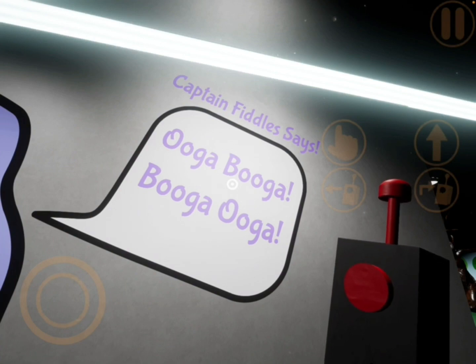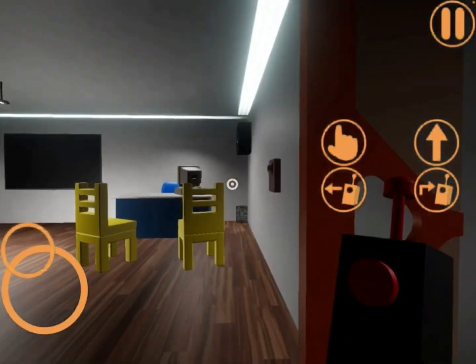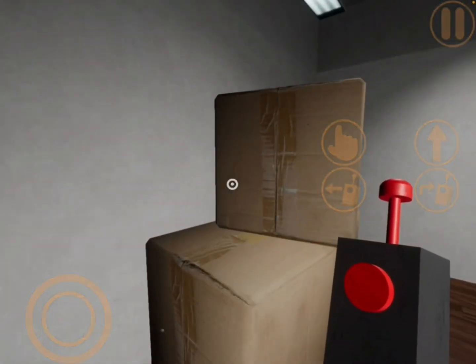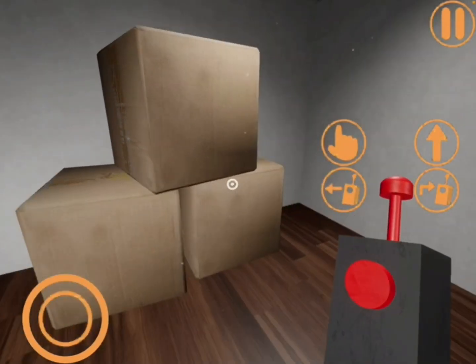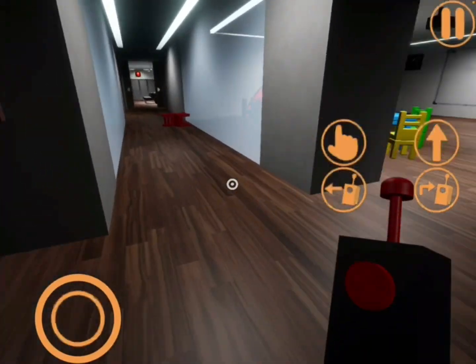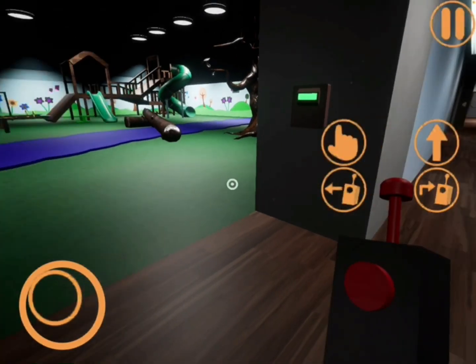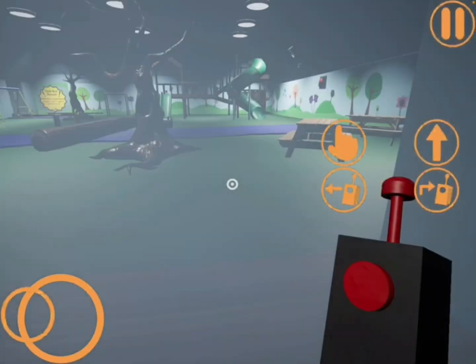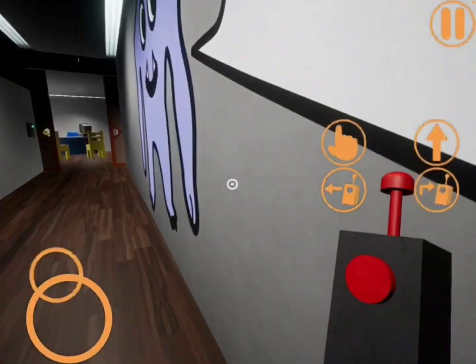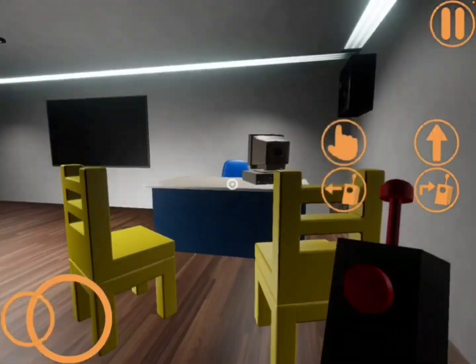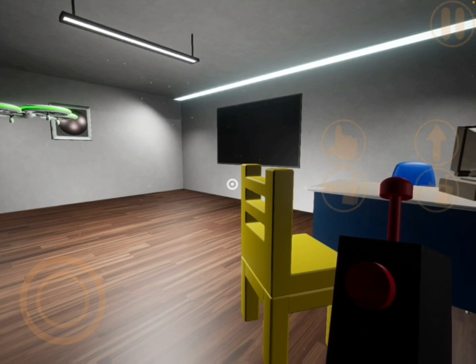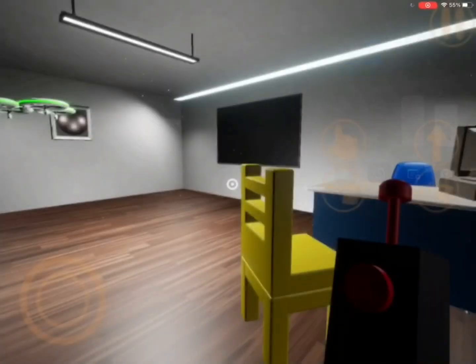Oh wait, hold on. This guy, Captain Fiddles, says: Ooga booga booga ooga. That's so weird. How are kids gonna like that? Oh my gosh, these boxes are like literal, so realistic. Dang. I think they're just pictures of boxes, to be honest. I don't know what to do. Hold on, just a sec. I gotta stop recording this and look this up. I don't really know how to do this part. Hold on.